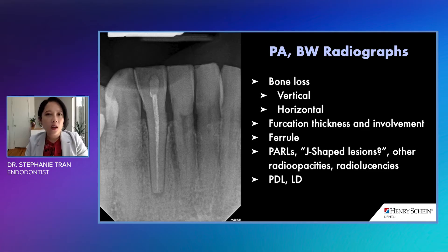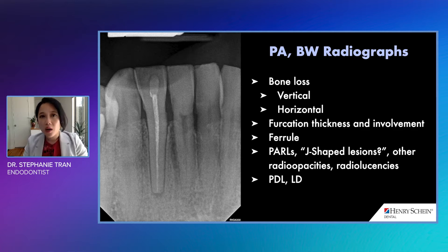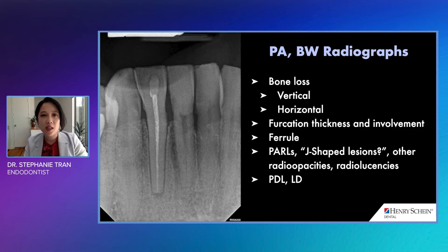When we first start off with an evaluation we of course take the two-dimensional radiographs — in this case especially a PA because we want to see the apical portion of the tooth. We start off with the clinical evaluation as well with all the clinical findings, the patient interview, as well as sensibility testing such as percussion, palpation testing, and pulp vitality testing.